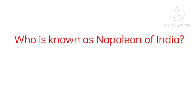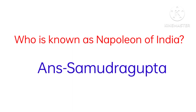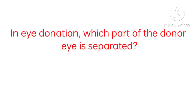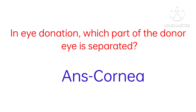Question number nine: Who is known as the Napoleon of India? The answer is Samudragupta. Question number ten: In eye donation, which part of the donor's eye is separated? The answer is the cornea.